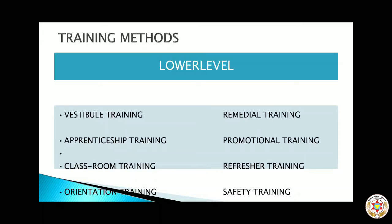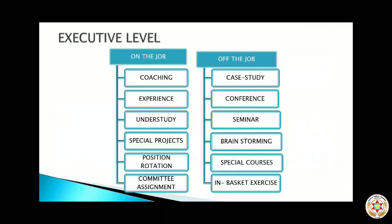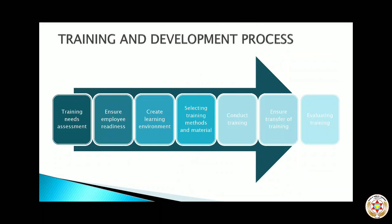Executive level training programs are also classified into on-the-job and off-the-job methods. On-the-job training programs include coaching, experience, understudy, special projects, position rotation, and committee assignments. Some major off-the-job training methods are case study, conferences, seminars, brainstorming, special courses, and in-basket exercises. These can be studied in detail in other classes.